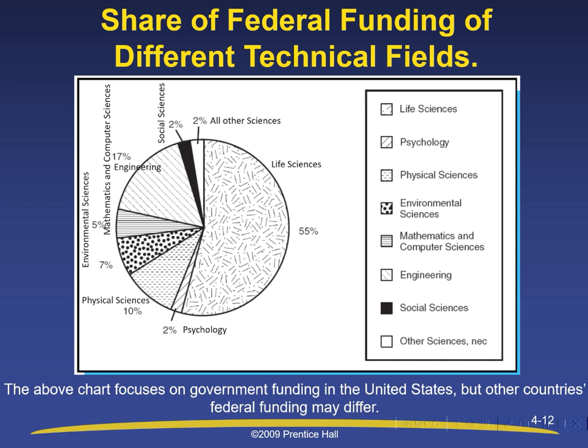Share of federal funding of different technical fields: The chart focuses on government funding in the United States, though other countries' federal funding may differ. Life sciences had the largest share at 55%, engineering at 17%, physical sciences at 10%, environmental sciences at 7%, mathematics and computer sciences at 5%, psychology at 2%, social sciences at 2%, and all other sciences at 2%.